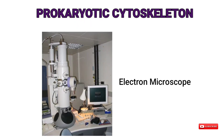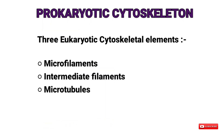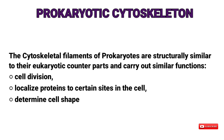Regarding the prokaryotic cytoskeleton — when examined with the electron microscope, the cytoplasmic matrix of prokaryotes is packed with ribosomes. For many years it was thought that prokaryotes lacked the high level of cytoplasmic organization present in eukaryotic cells because they lacked a cytoskeleton. Recently, homologs of all three eukaryotic cytoskeleton elements — microfilaments, intermediate filaments, and microtubules — have been identified in bacteria, and one has been identified in archaea. These cytoskeletal filaments participate in cell division, localize proteins to certain sites, and determine cell shape.